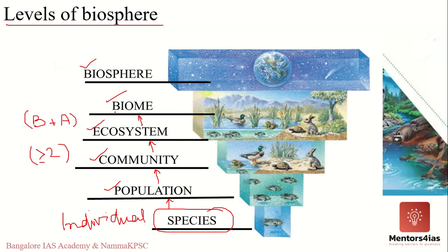A biome is a large ecological area with similar climatic conditions; it can have multiple ecosystems within it. Finally, the biosphere includes all living organisms along with all the spheres they interact with — the lithosphere, atmosphere, and hydrosphere. When you include all the biomes, that is when you get the biosphere.